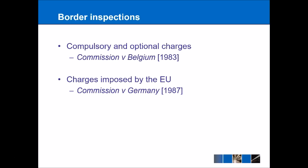Commission v Germany 1987 is also quite interesting because it says that where charges are imposed by the EU itself — applying across all 28 member states — these will be allowed. There can be a charge in place basically because it applies uniformly across the whole of the European Union.